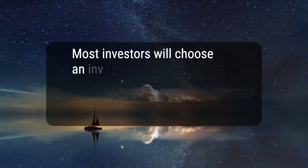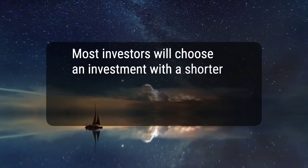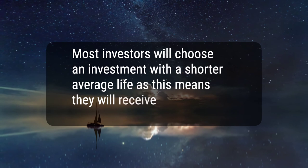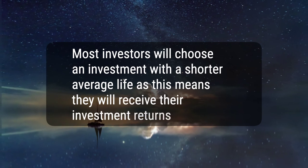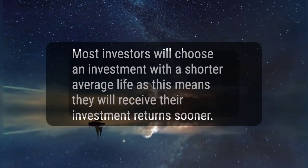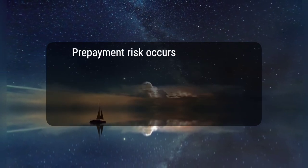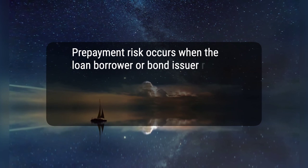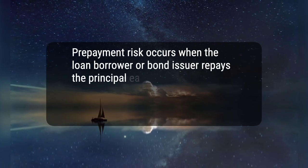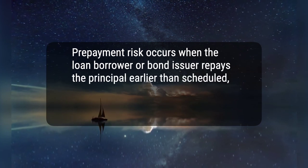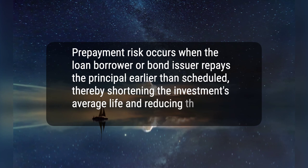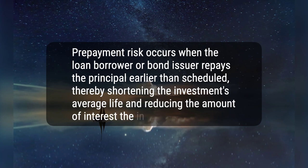3. Most investors will choose an investment with a shorter average life as this means they will receive their investment returns sooner. 4. Prepayment risk occurs when the loan borrower or bond issuer repays the principal earlier than scheduled, thereby shortening the investment's average life and reducing the amount of interest the investor will receive.